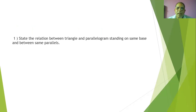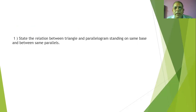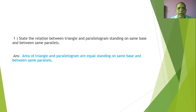Question number one — it is a very short question. State the relation between a triangle and a parallelogram standing on the same base and between the same parallels. This is connected with a theorem related to triangle and parallelogram. We must know the relation. The area of a triangle is half the area of a parallelogram standing on the same base and between the same parallels.